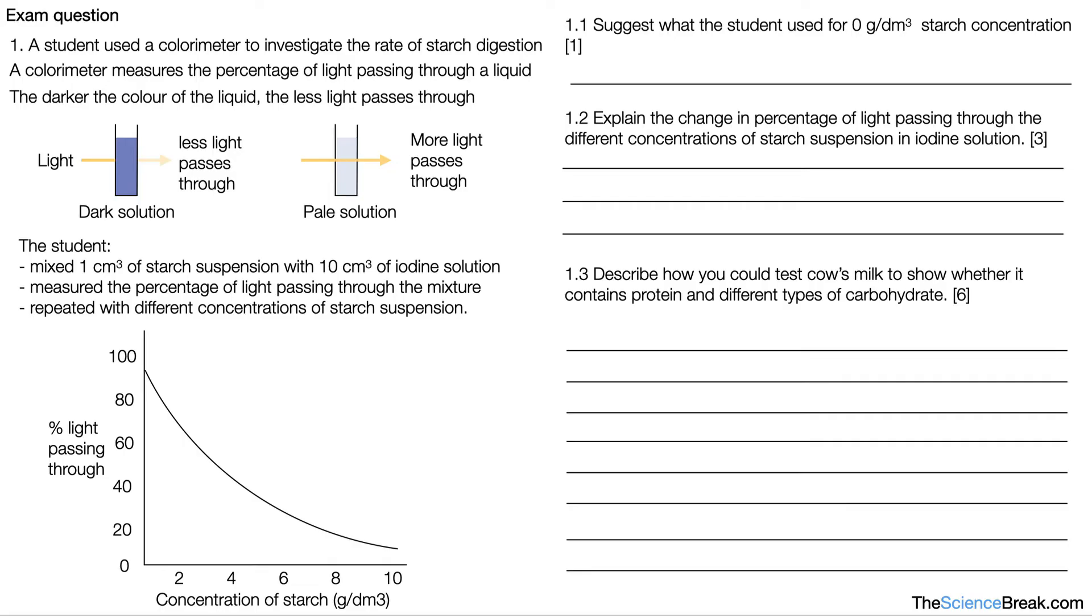1.1 says suggest what the student used for a naught grams per decimeter cubed starch concentration. That means there's no starch in there at all. So the student could have used ten centimeters cubed of the dilute iodine and just one centimeter cubed of pure water, or water with no starch.